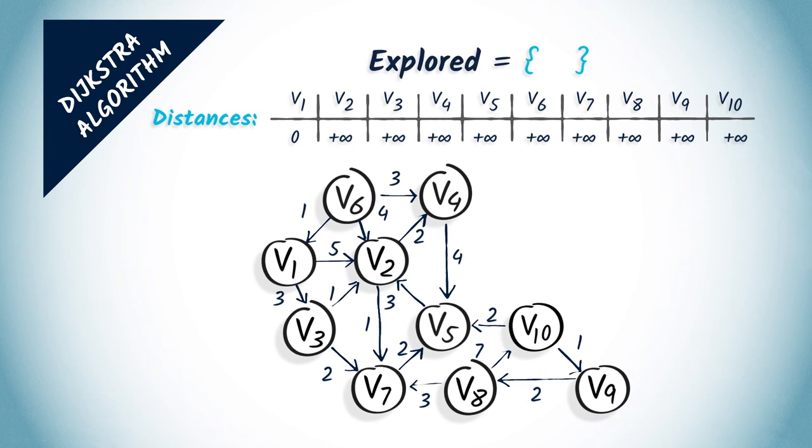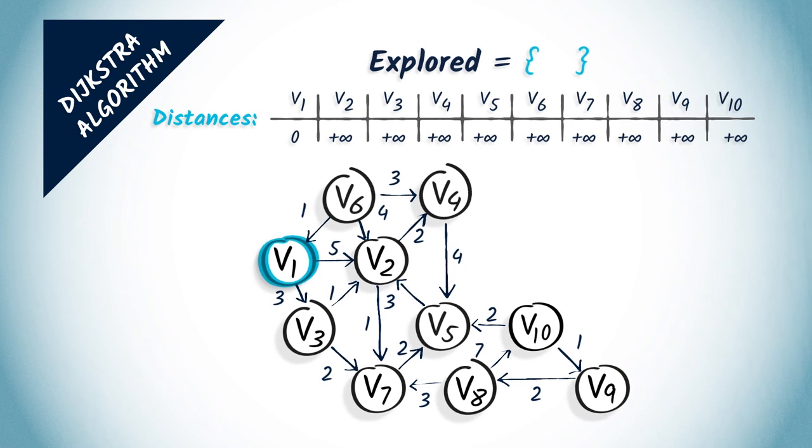The first step is to select a non-explored vertex that is at minimum distance from the starting vertex. Here, we select v1 as our starting vertex, and we add it to the set of explored vertices. The second step is to update the distances, taking into account the selected vertex v1 and its neighbors.